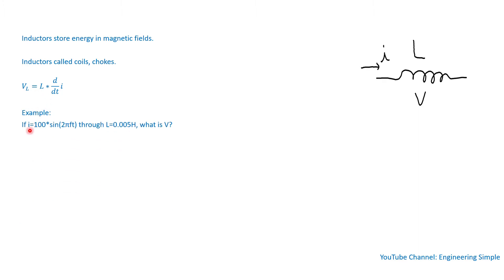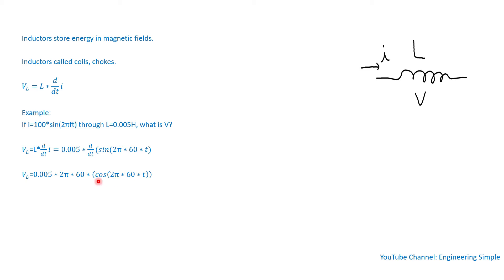Let's look at a quick example. If we have a current of 100 times sine of 2π times frequency times time, through an inductance of 0.005 Henry, then the voltage — from this equation — is just inductance times the derivative of this current. The derivative of sine is cosine, and taking the derivative of 2π times 60 Hz times time gives 0.005 × 2π × 60 × cosine(2π × 60 × t), which reduces to 1.884 cos(377t) volts.